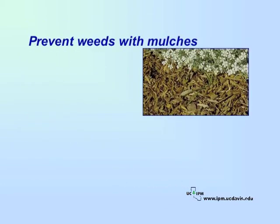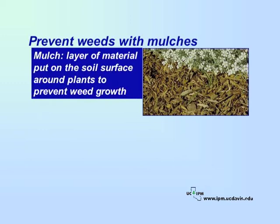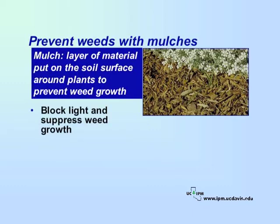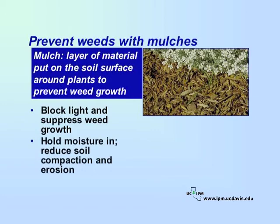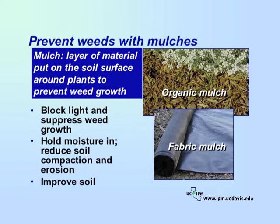Mulches are very effective at preventing weed germination and growth. A mulch is a layer of material put on the soil surface around plants to prevent weeds from growing. Seedlings need light to grow, and mulches block the light and suppress the growth of many weeds. Many mulches also help to hold moisture in and reduce soil compaction and erosion. Some mulches even improve the soil by adding nutrients. Available mulches include organic mulches such as wood chips, bark chips, sawdust, leaves, or compost; rock mulches; and synthetic mulches such as plastics or fabrics.